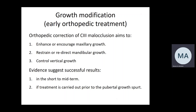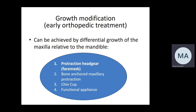The aims of growth modification, or orthopedic treatment, are to enhance and encourage anterior maxillary growth, restrain or redirect mandibular growth, and control vertical growth. Evidence suggests good success results in the short to medium term. If treatment is carried out prior to the pubertal growth spurt, there is a good chance of success. Growth modification can be achieved by differential growth of the maxilla relative to the mandible using protraction headgear (face mask), bone-anchored maxillary protraction, a combination of both, chin cup, or functional appliances.